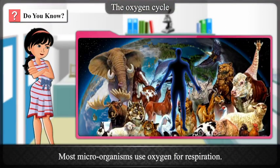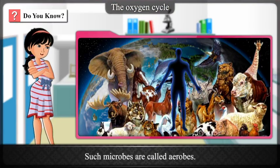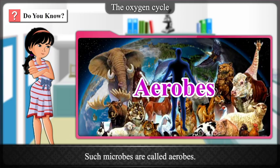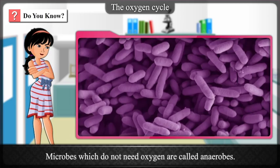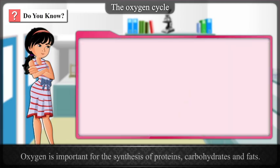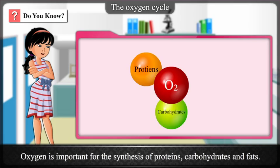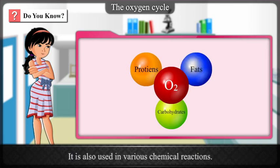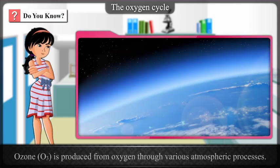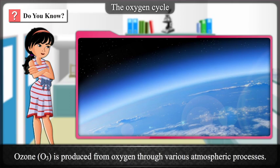Most microorganisms use oxygen for respiration — such microbes are called aerobes. Microbes which do not need oxygen are called anaerobes. Oxygen is important for the synthesis of proteins, carbohydrates and fats, and is used in various chemical reactions. Ozone (O₃) is produced from oxygen through various atmospheric processes.